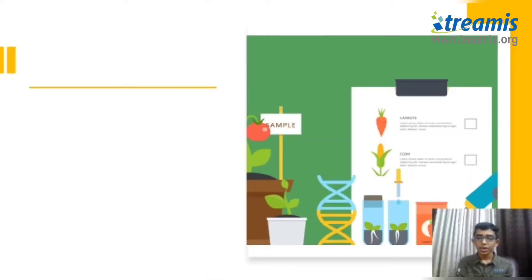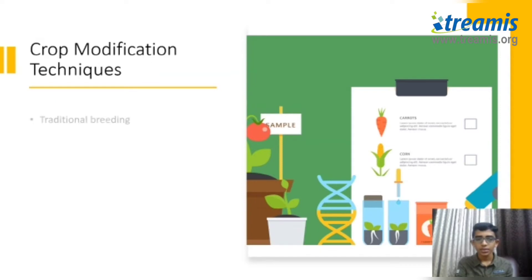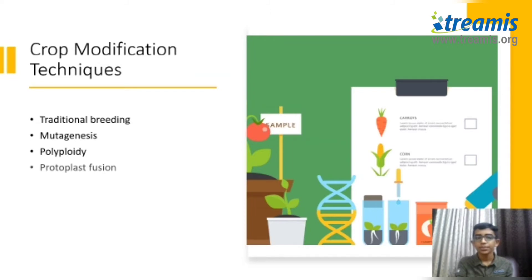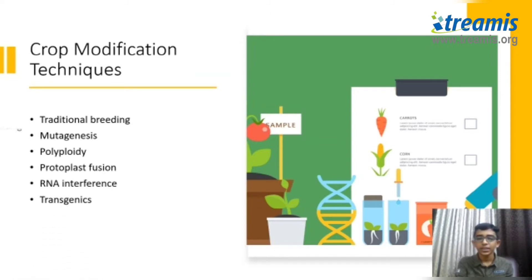I am going to take you through the various crop modification techniques in agricultural biotechnology. They are traditional breeding, mutagenesis, polyploidy, protoplast fusion, RNA interference, transgenics, and genome editing.